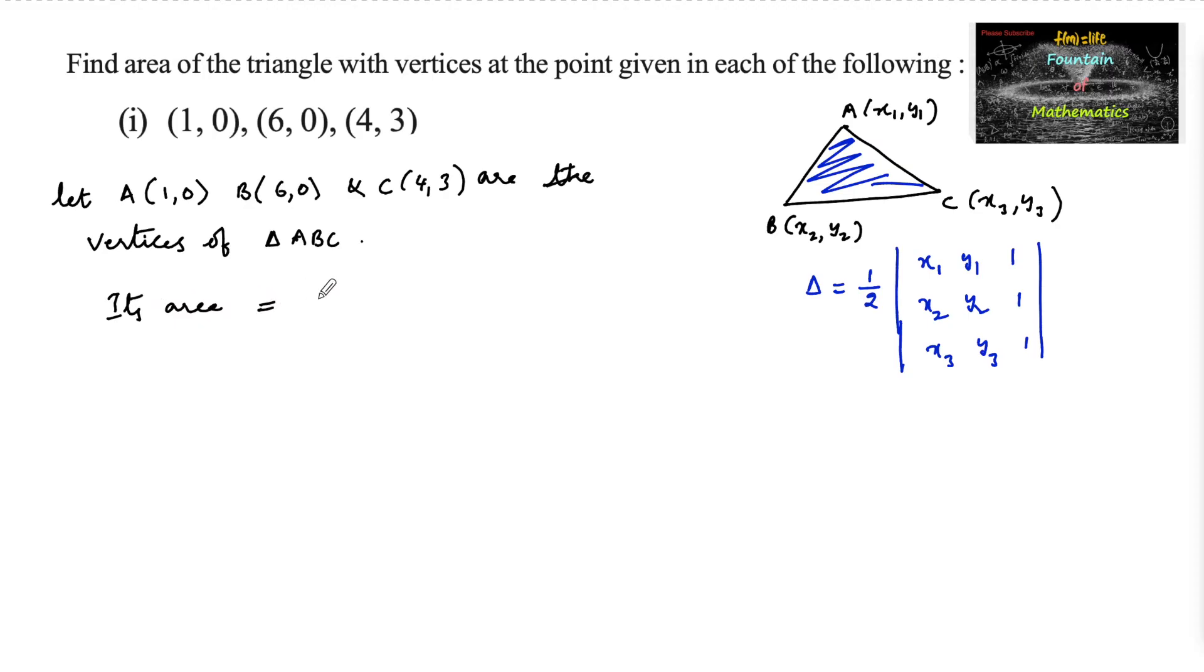is given by half the determinant of: 1, 0, 1 in the first row; 6, 0, 1 in the second row; and 4, 3, 1 in the third row.